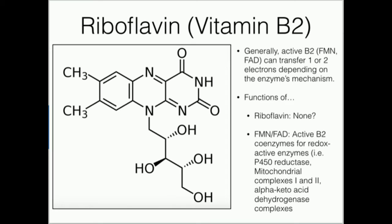What do these flavins do? When I use the term flavin, I'm referring to something that has this general structure — these are flavins. This triple ring structure up here is called the isoalloxazine ring. Things that have an isoalloxazine ring, which include riboflavin, FMN, and FAD, are called flavins. Flavins have the capacity to transfer either one or two electrons. Unlike NAD, which can only transfer two electrons, flavins can transfer one or two due to the nature of their chemistry. So they can be involved in hydride transfers or radical chemistry, which is pretty important.